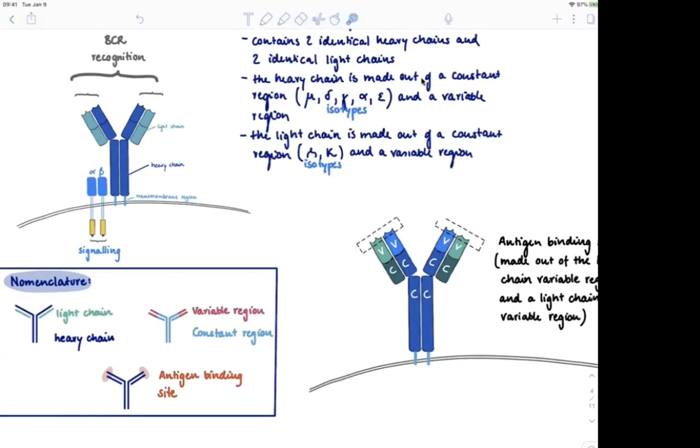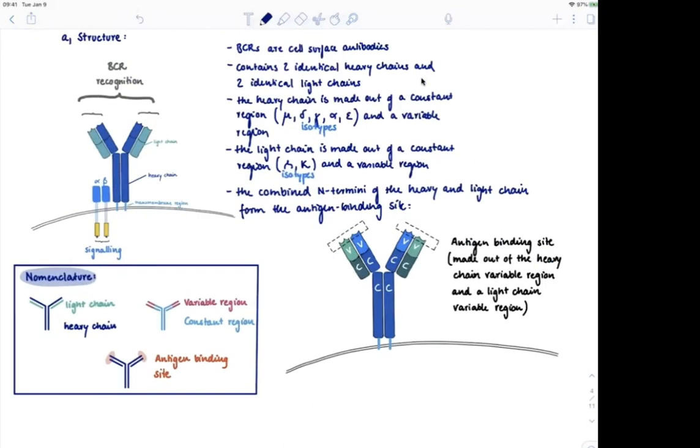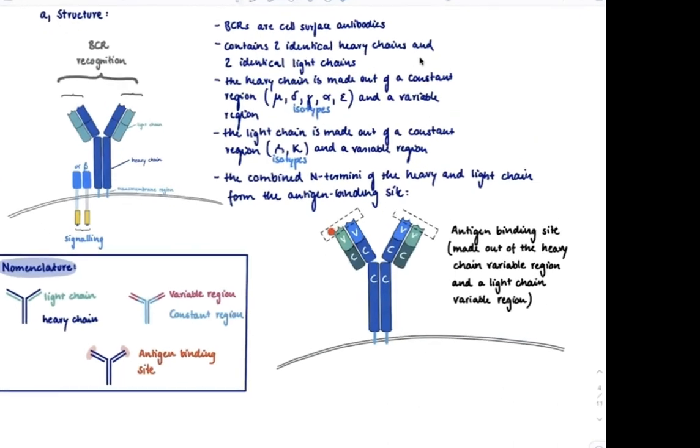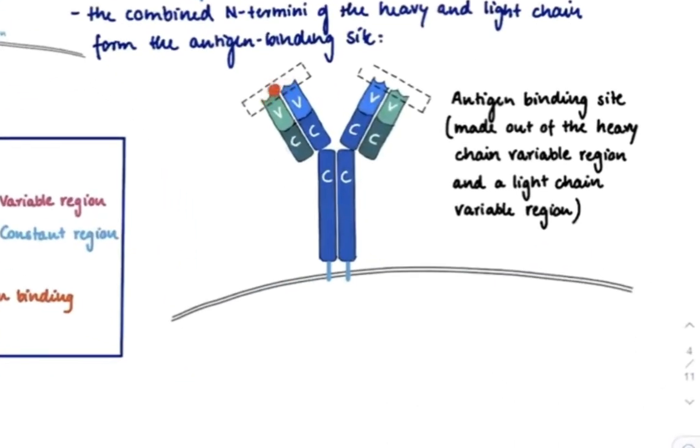The next characteristic that I want to discuss is the antigen binding site. And it turns out that the combined N-termini of the heavy and the light chain form the antigen binding site. So I'm going to show you this antigen binding site here. That's the site that recognizes the antigen. And again, you can clearly see it's made out of heavy and light chain, and it lies within the variable region.